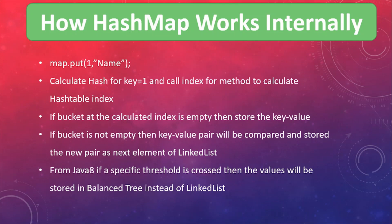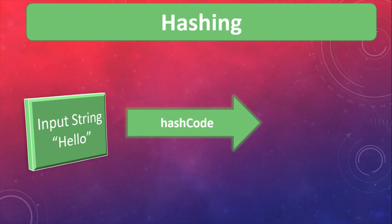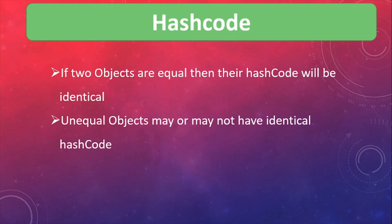Now let's see the basic building components of HashMap, which are hashing, hash code, and hash table. Hashing is a process of mapping data to some integer value using hashing algorithms. In Java, a hash code is an integer value linked with each object. If two objects are equal, their hash code must be identical, but the vice versa is not true — two unequal objects may or may not have identical hash codes. If the hash code is the same, that does not mean the objects are equal.